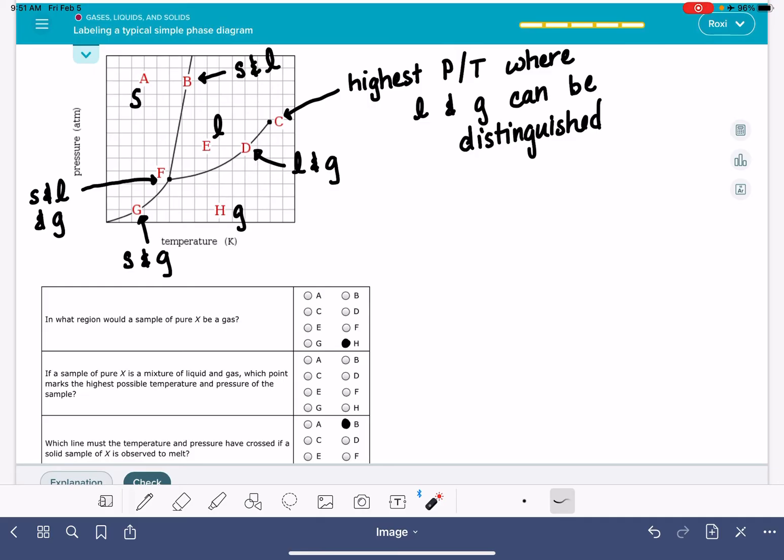And then sometimes some of these questions are a little bit trickier, like this question number two. If the sample is a mixture of liquid and gas, it needs to be falling along this particular line right here. If it's a mixture, it can't be in one of these specific areas. If we have a mixture, it has to be along one of the three lines. Or if it's a mixture of all three, it would have to be right here. If it's a mixture of liquid and gas, so it's somewhere along this line, at what point is the highest possible temperature and pressure? Well, that's our critical point right there.